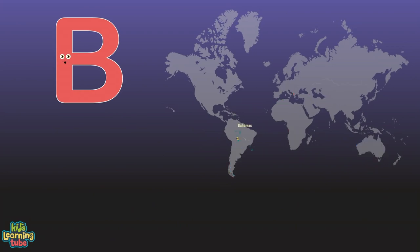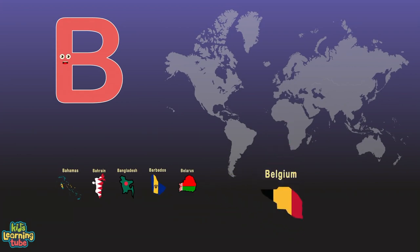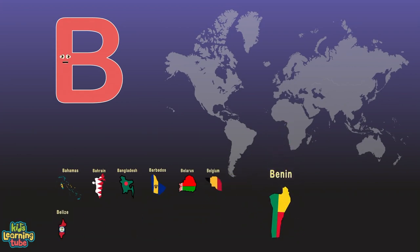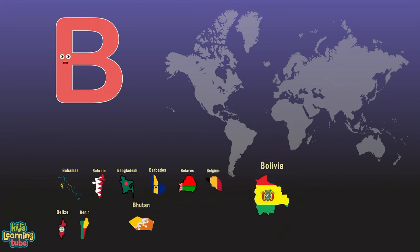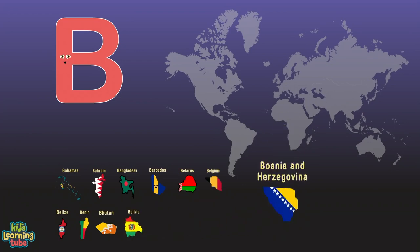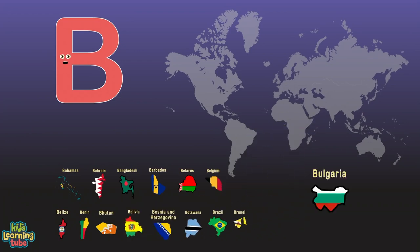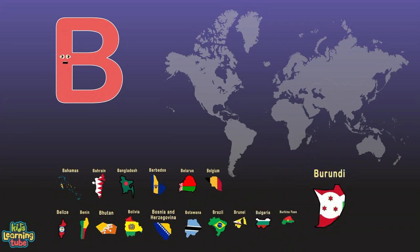B is for Bahamas, Bahrain, Bangladesh, Barbados, Belarus, Belgium, Belize, and Benin. Bhutan, Bolivia, Bosnia and Herzegovina, Botswana, Brazil, Brunei, Bulgaria, Burkina Faso, and Burundi.